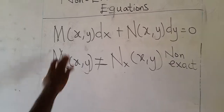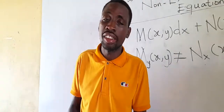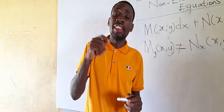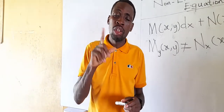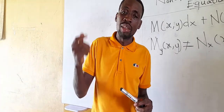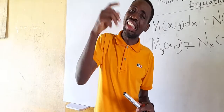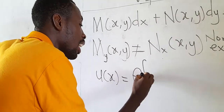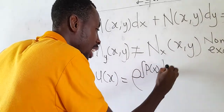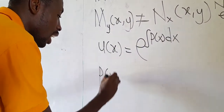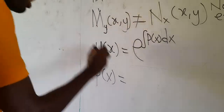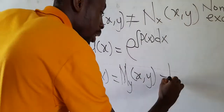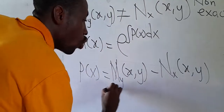After we determine that our first-order ordinary differential equation is non-exact, we need to find an integrating factor. We multiply the integrating factor to the non-exact equation, and it will become exact. The integrating factor U(x) is given as e to the power of the integral of P(x) dx. P(x) is equal to the partial differentiation of M with respect to Y minus the partial differentiation of N with respect to X, all over M.